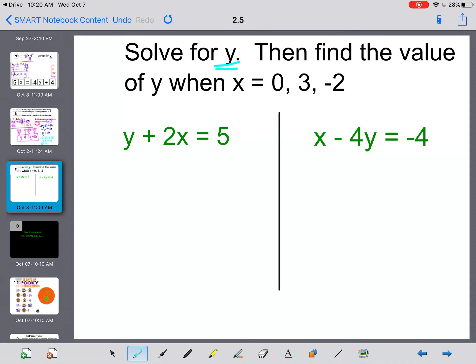Last slide for today. We want you to solve for y and then find the value of y if x is 0, 3, and negative 2. So you're going to get y by itself first, then plug in those three numbers into your x. So if I want to get y by itself, this one, all I have to do is subtract the 2x to move it to the other side. So y is equal to a negative 2x plus 5, or 5 minus 2x. Same thing. That's part 1.